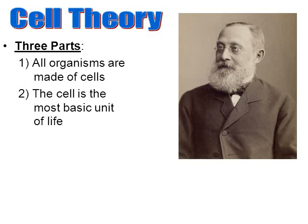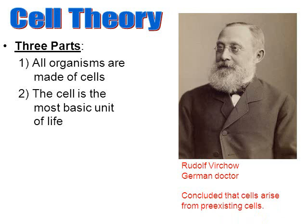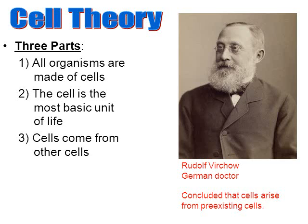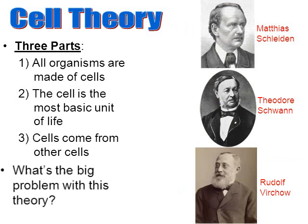Here comes a third gentleman to finish off the cell theory — another German doctor by the name of Rudolf Virchow. He was working with sick people and examining their cells under the microscope. He noticed that cells multiply and come from other cells. This really is the final part of the cell theory — cells don't just appear out of nowhere. There was a time when we thought cells could just spontaneously generate, where life could just poof into existence. This cell theory is the beginning of our modern cell biology.